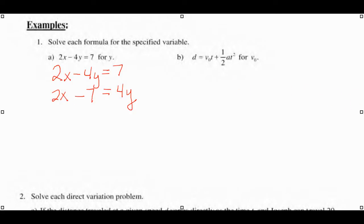Now to get y by itself we're going to divide every term by 4, and now we have y. We usually write the x term first, that's going to be one half x minus seven fourths.